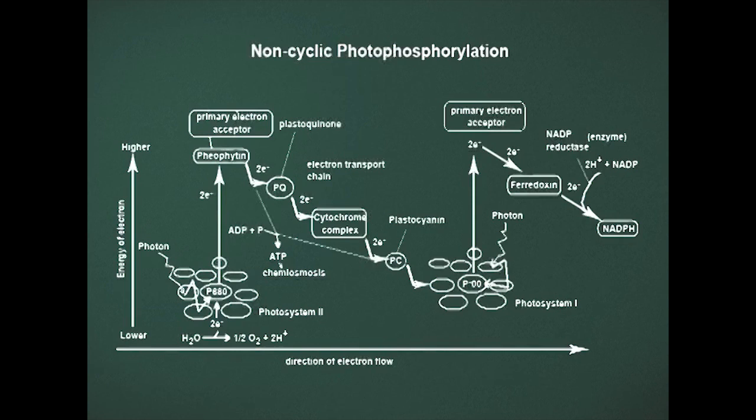The reaction center P700 of Photosystem 1 becomes excited by absorbing light energy from the sun, and the excited P700 releases high energy electrons to ferredoxin, which is a protein that contains one iron-sulfur cluster. The oxidized P700 receives an electron from reduced plastocyanin and returns to its ground state. From the two molecules of ferredoxin, the high energy electrons are transferred to NADP+ to form NADPH in the presence of NADP reductase.